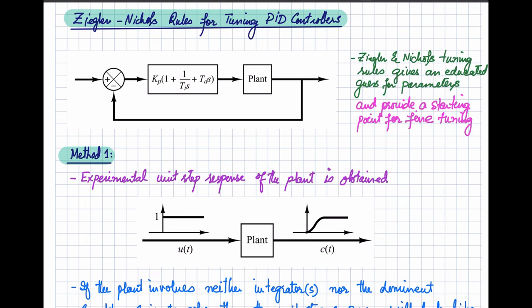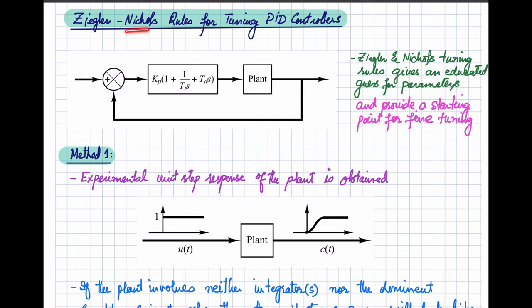In the experimental approach, we look at the unit step response of the system, and with the help of that we determine the controller gains. The process of selecting the controller parameters to meet given specifications is known as controller tuning. Ziegler and Nichols suggested rules for tuning PID controllers — a method to determine Kp, Ti, and Td based on the experimental response of the plant to meet transient as well as steady state specifications.